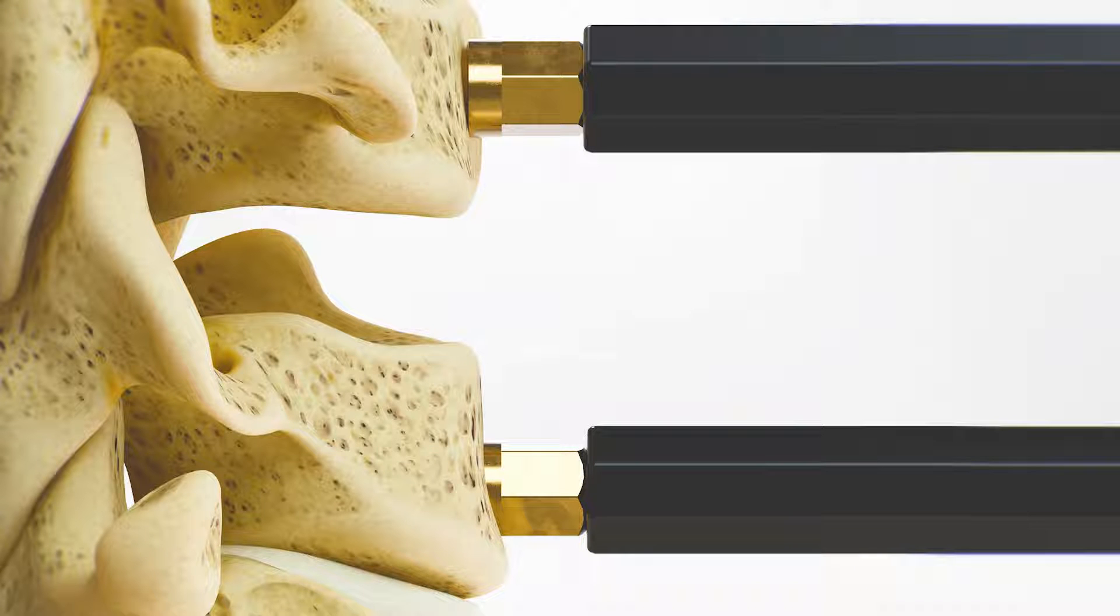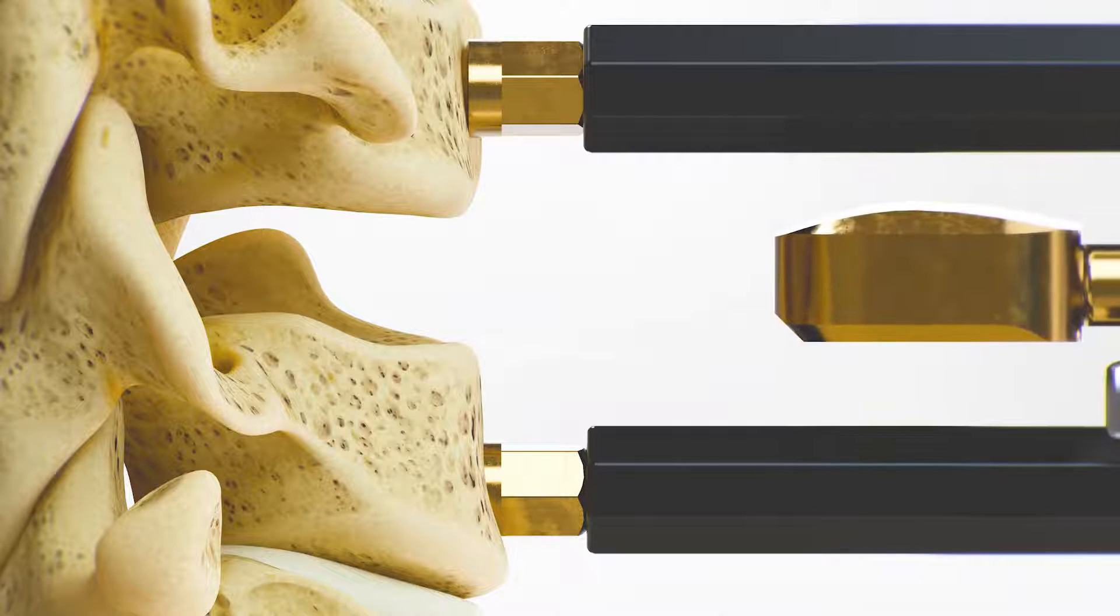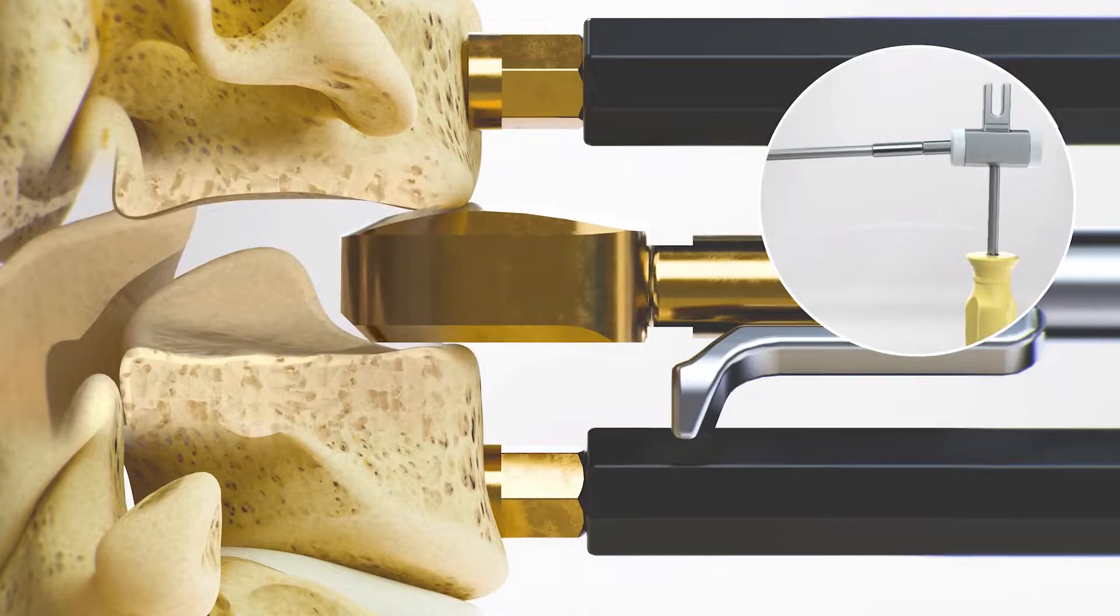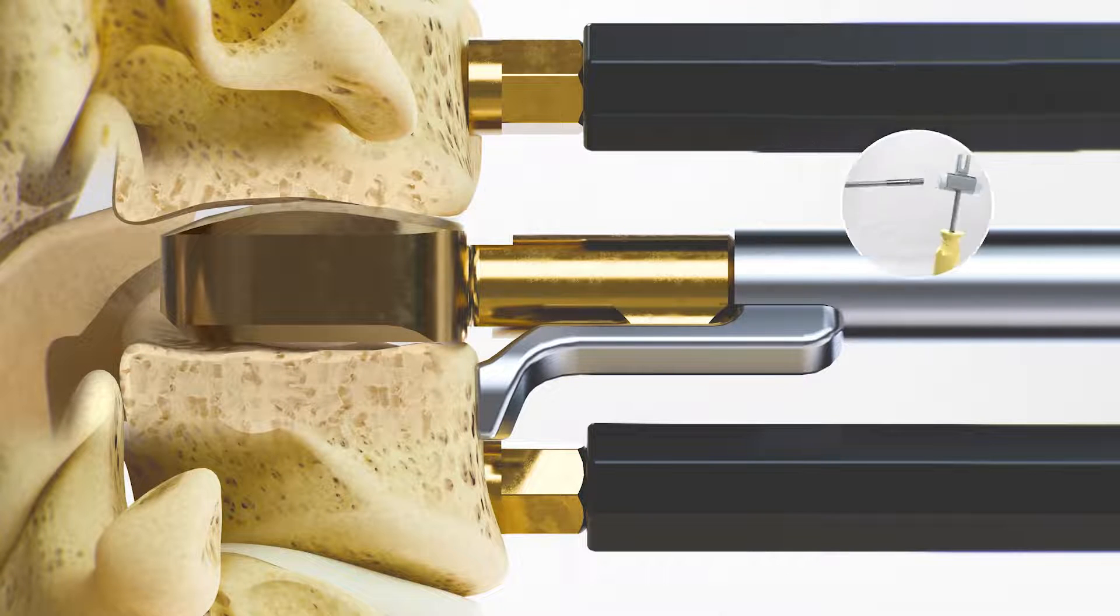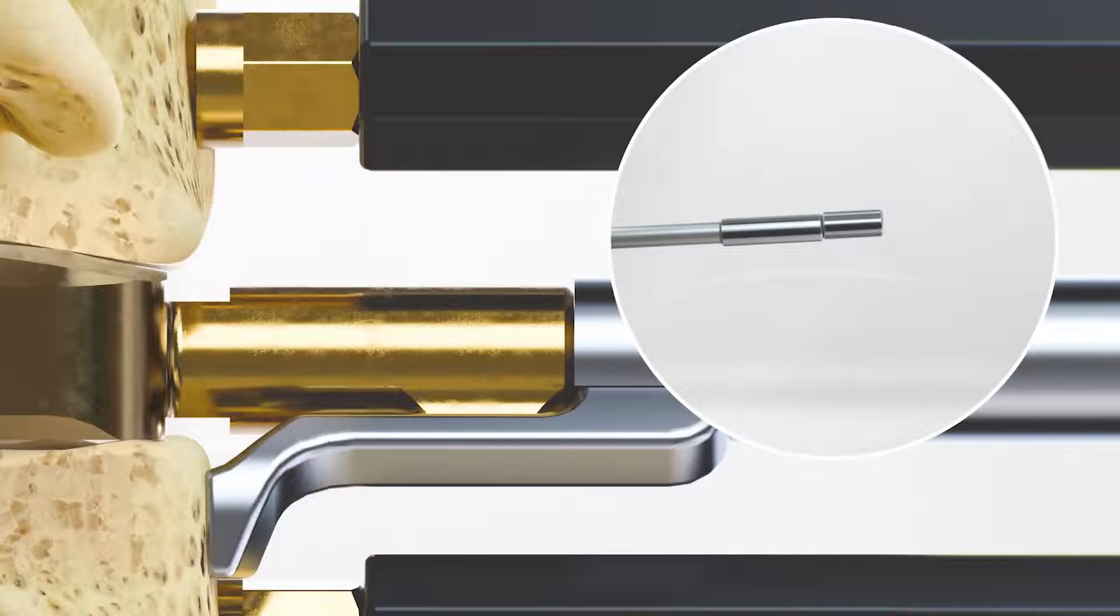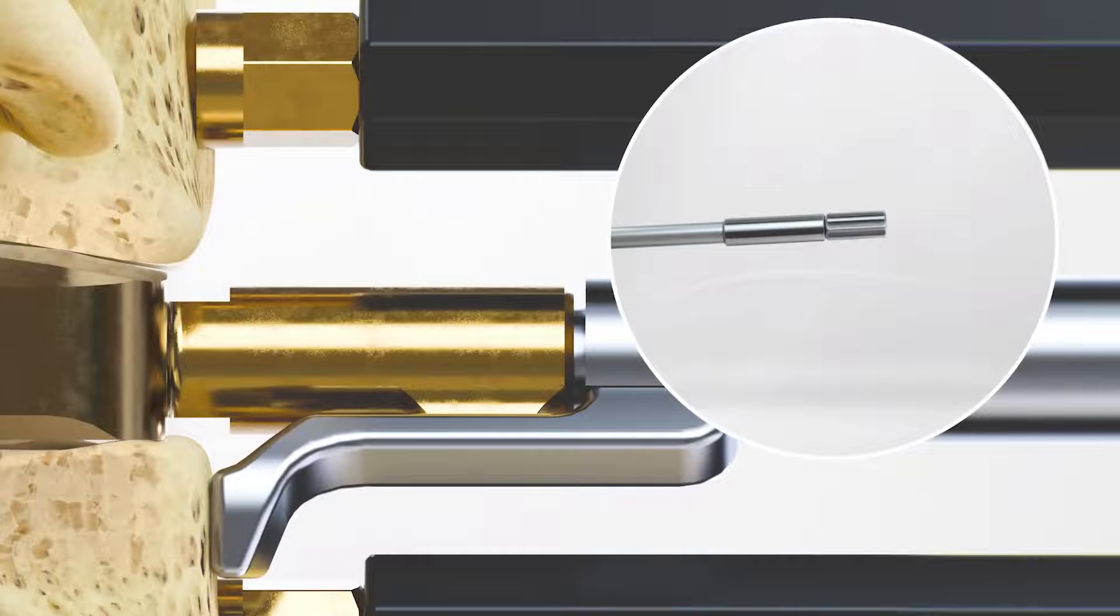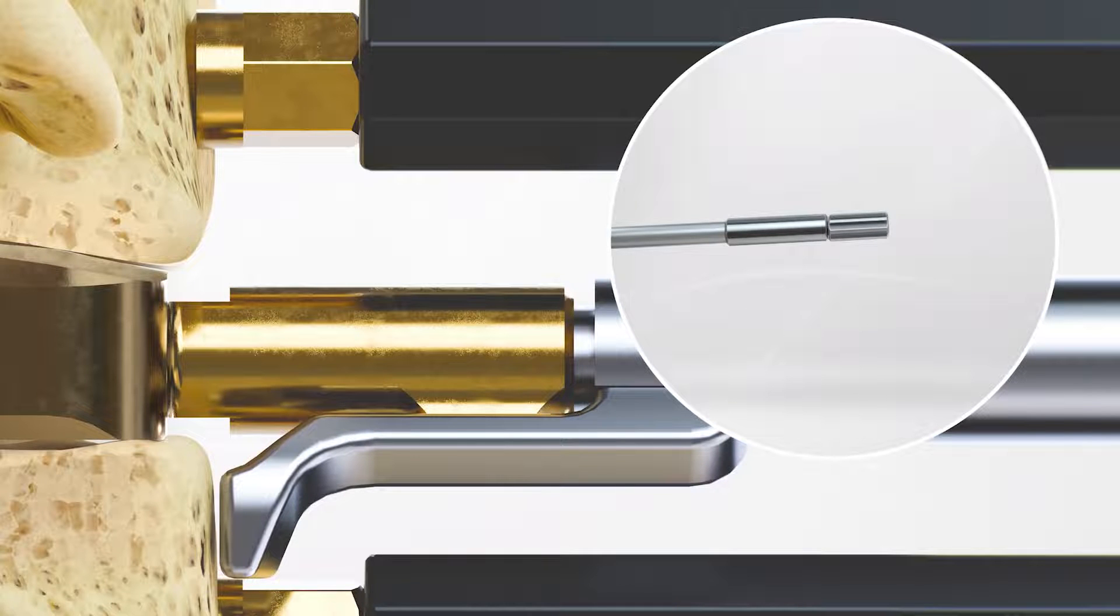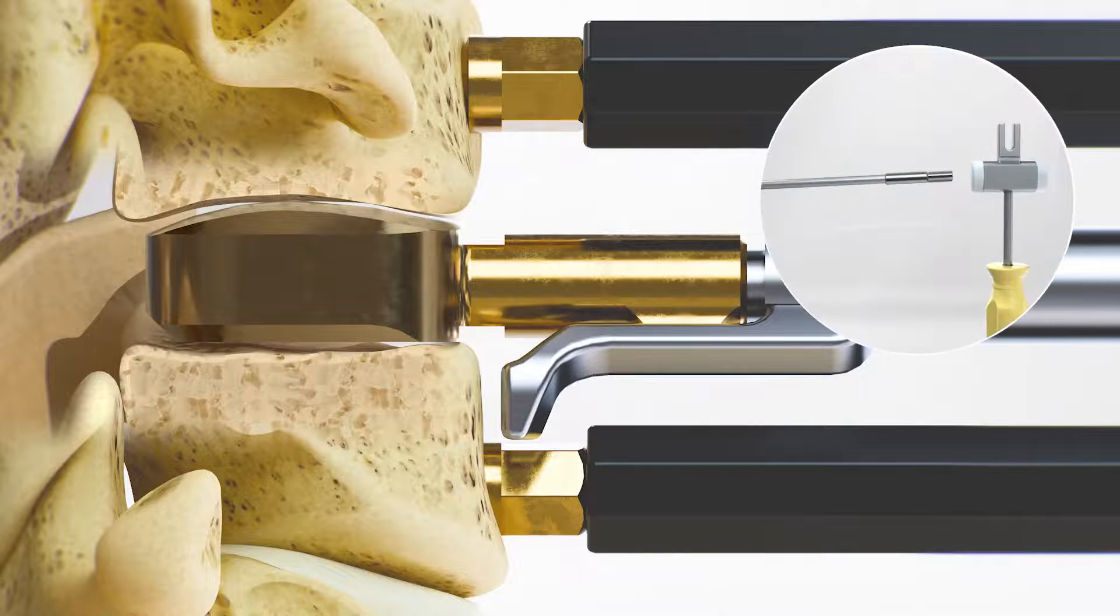Following discectomy, decompression, and remobilization, a trial is used to assess the implant size and position. It is recommended to use the largest footprint and shortest height implant positioned to the posterior margin of the disc space. Adjust the trial stop as needed to allow proper positioning of the trial within the disc space. The trial is advanced into the disc space.